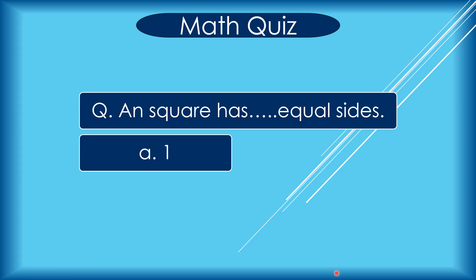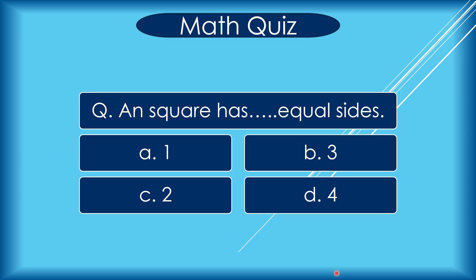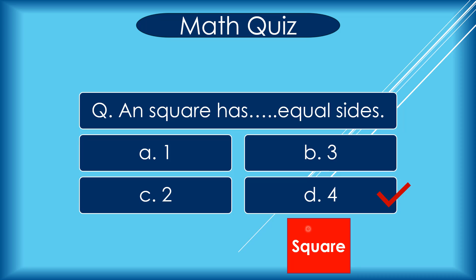A square has how many equal sides? A 1, B 3, C 2, D 4. Correct answer is D 4. 1, 2, 3, 4 — all square sides are equal.